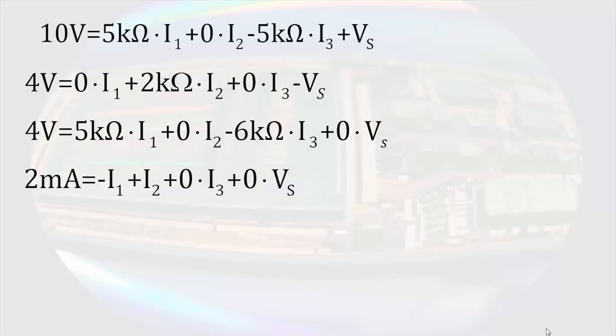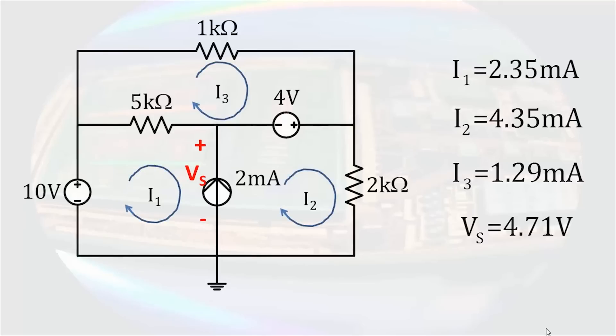Solving the system of equations using a calculator or similar tool gives us I1 equal to 2.35 milliamps, I2 equal to 4.35 milliamps, I3 equal to 1.29 milliamps, and VS equal to 4.71 volts.